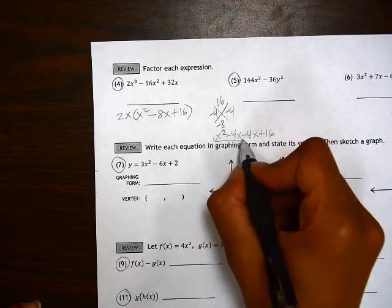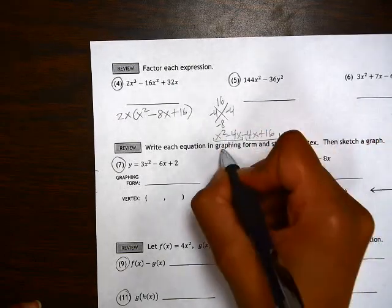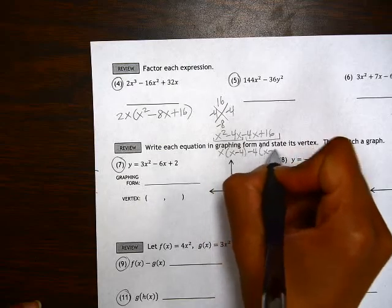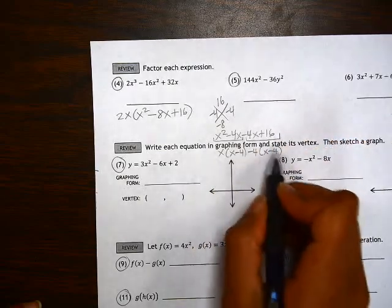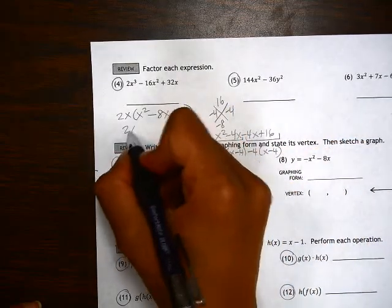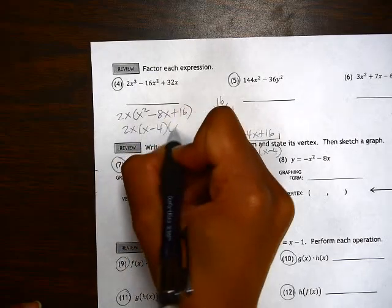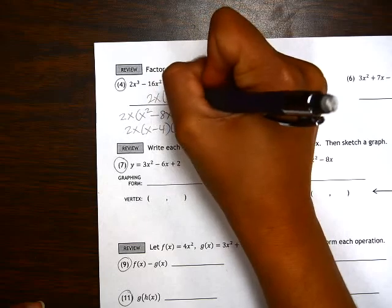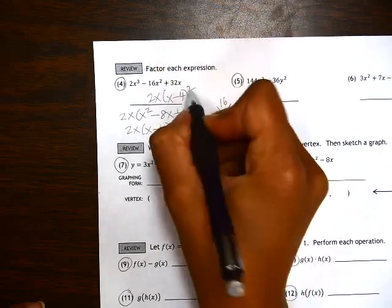And then if we group that, that would give me x times x minus 4 minus 4 times x minus 4. So this gives me two factors, x minus 4, x minus 4 that are the same. Another way to write that would be 2x and then x minus 4 quantity squared.